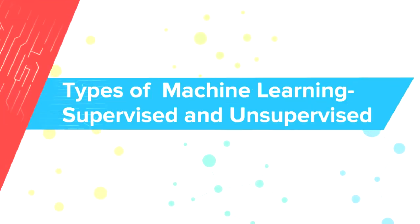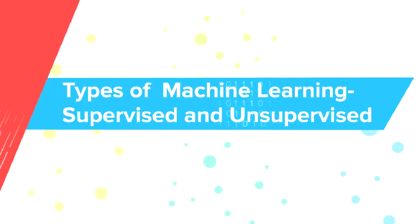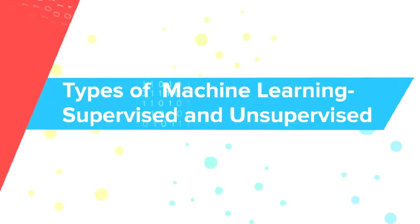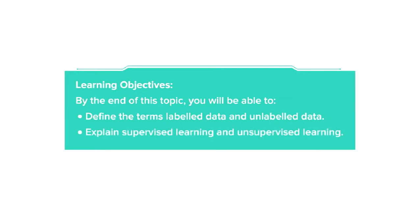Hi, welcome to the tutorial on Types of Machine Learning: Supervised and Unsupervised. By the end of this topic, you will be able to define the terms labeled data and unlabeled data, and explain supervised learning and unsupervised learning.